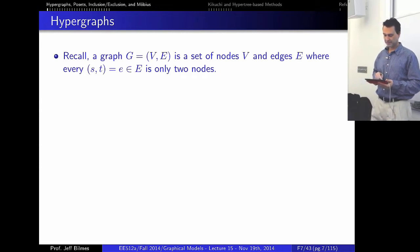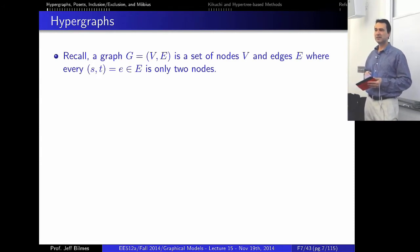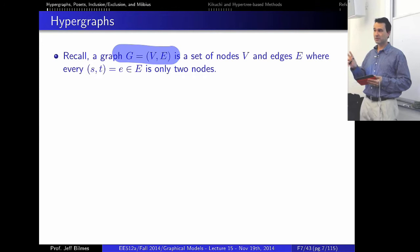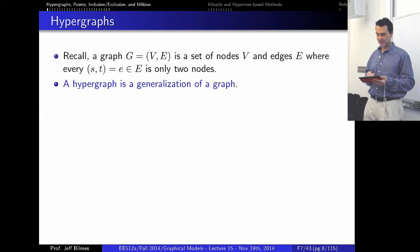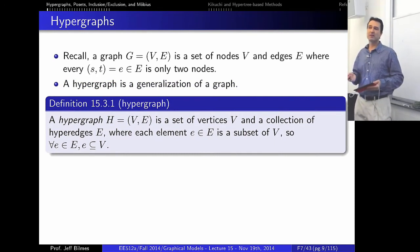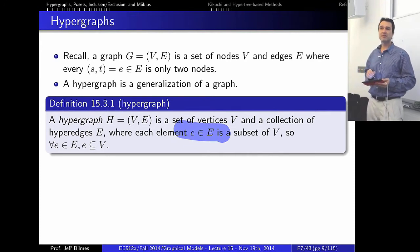So we're going to talk a little bit about hypergraphs, partially ordered sets, inclusion-exclusion, and the Möbius inversion lemma, and how all these things relate to find us the Kikuchi approximation. A graph can be represented as a set of nodes and a set of edges, where each edge is a pair of vertices. A hypergraph is a generalization where every hyperedge can be one, two, three, or more vertices — each edge is just some subset of the vertices.